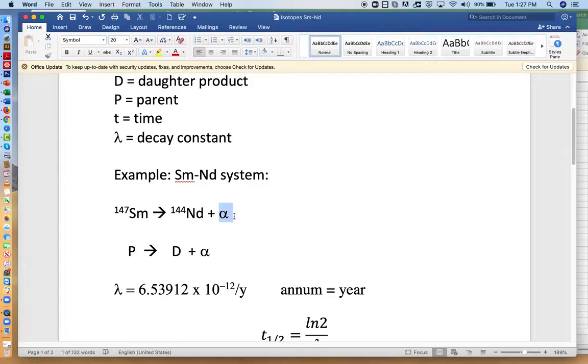And instead of a beta particle, what's being given off is an alpha particle. And you can tell that because an alpha particle has an atomic weight of four, two protons, two neutrons. And you can see that as this atomic weight goes down from 147 to 144.